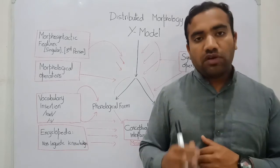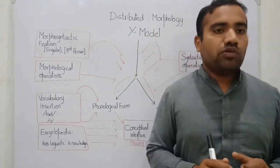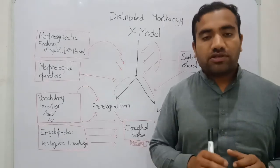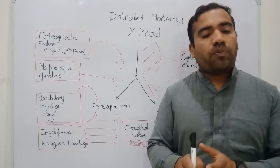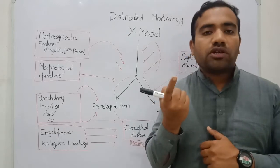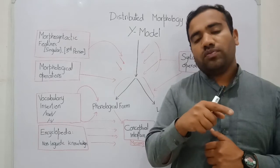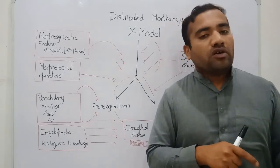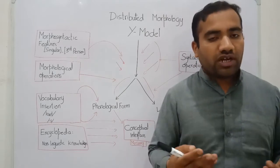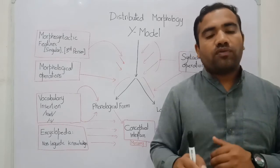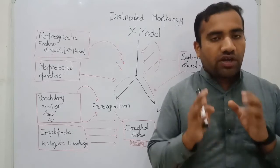In this video I want to tell you what is the wire model of distributed morphology. Distributed morphology has claimed that there is one syntactic operation — the same syntactic operation that is being applied in the sentence — and that syntactic operation will also apply within the morphological level. Using the same operation we can generate new sentences and new words. This is the core of distributed morphology.